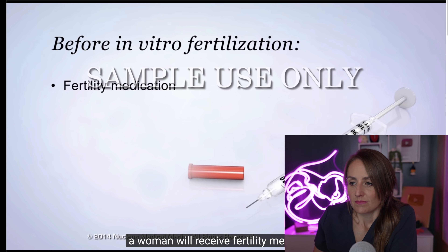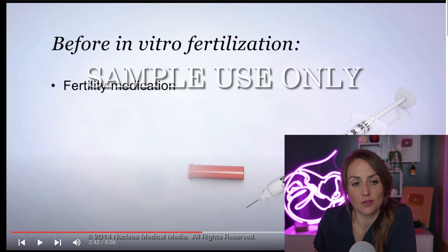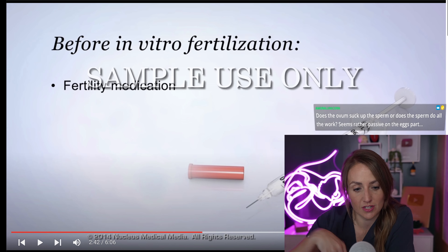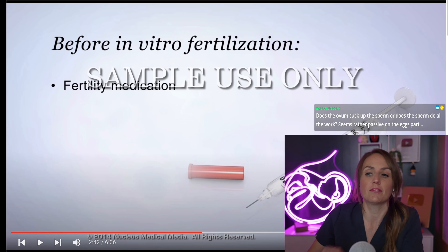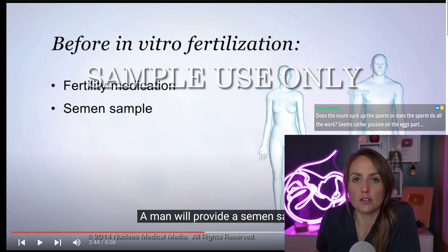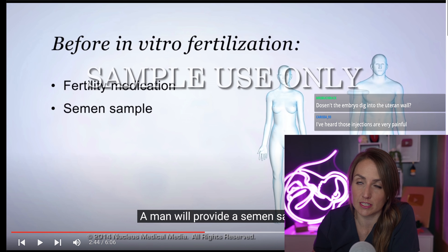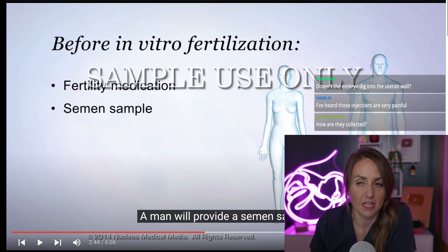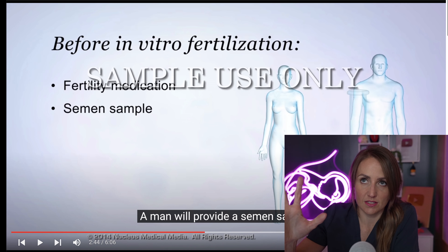A woman will receive fertility medication that causes more than one egg to grow and mature in the ovaries. This is what we were talking about yesterday — injectable medications to stimulate the ovaries to produce more than one follicle. You don't want them to reach ovulation; you want to get close and then collect them before ovulation occurs. You monitor that by watching their size: around 22 millimeters is where ovulation becomes more likely, so you watch for that threshold.